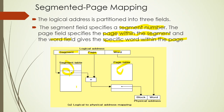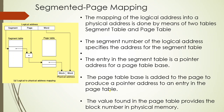The page table is used alongside the segment table. The last logical address maps to a physical address — this is the process. The mapping of the logical address into a physical address is done by means of two tables: the segment table and the page table.